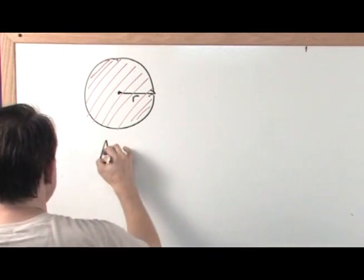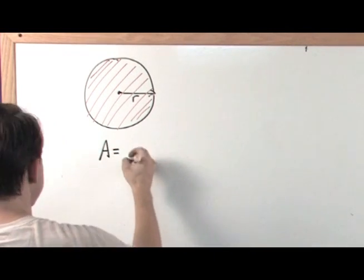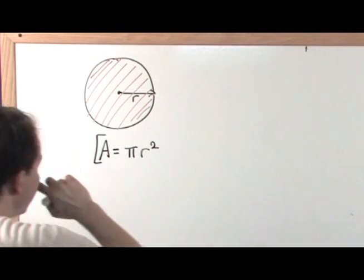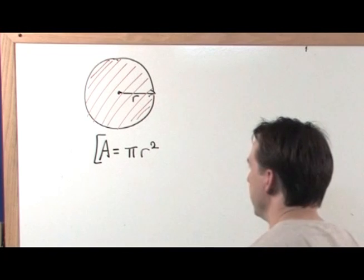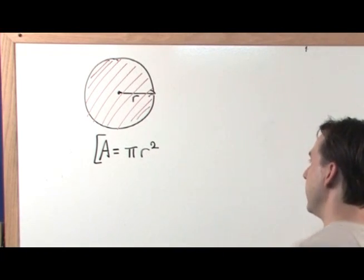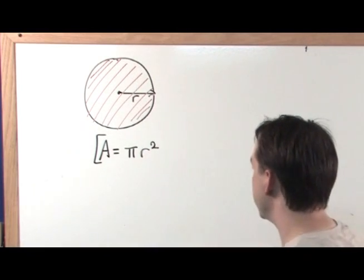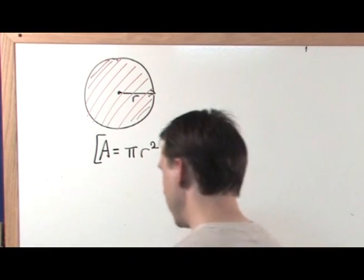And so the area of a circle is simply pi times r squared. So you see pi comes up everywhere. It's just a nice number, and it's very important to circles and to other areas of math. Pi times the radius times the radius again, radius squared. That is going to be the area.